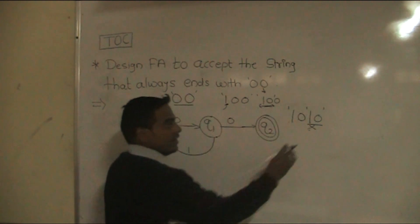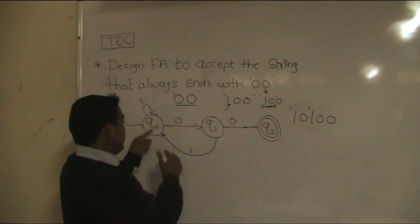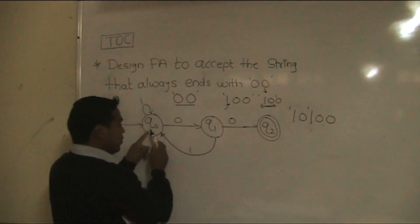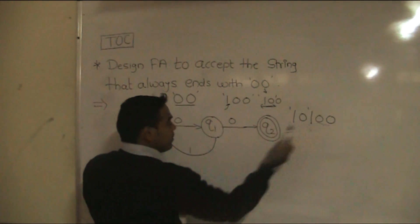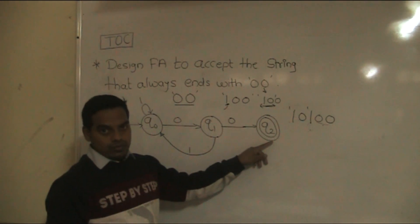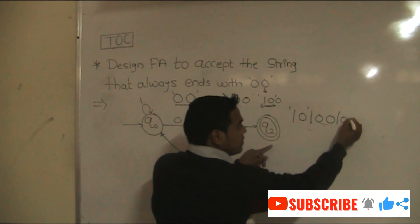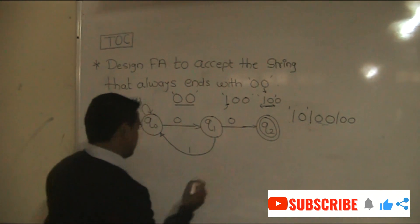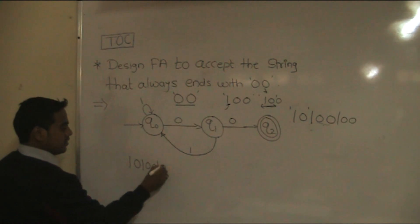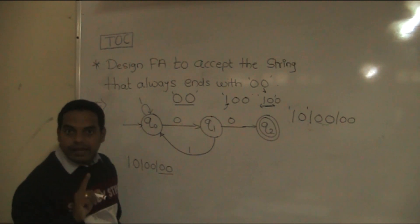If suppose 0, 0 come at the end: 1 comes → q0; 0 comes → q1; 1 comes → q0; 0 comes → q1; 0 comes → q2. So the string 10100 reaches the final state q2. And for a longer string like 1, 0, 1, 0, 0, 1, 0, 0 — it ends with 00, so it is accepted by finite automata. At q0 state 1 occurs → remains q0; 0 → q1; 1 → q0; 0 → q1; 0 → q2. The string is accepted.